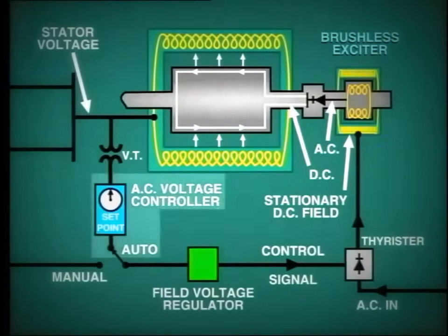When in auto, the field voltage regulator receives its command signal from the AC voltage controller, which in turn monitors the output voltage of the generator. The operator can adjust the AC set point as required. When starting up the unit, the field voltage regulator may be set to manual and in this case, the operator will control the regulator directly.